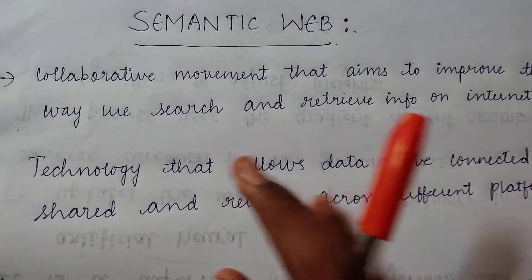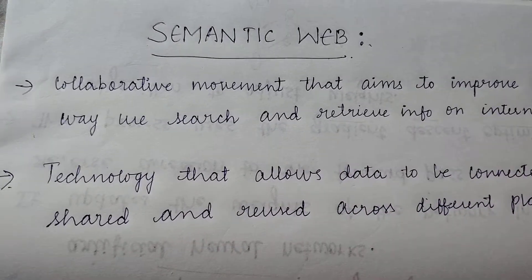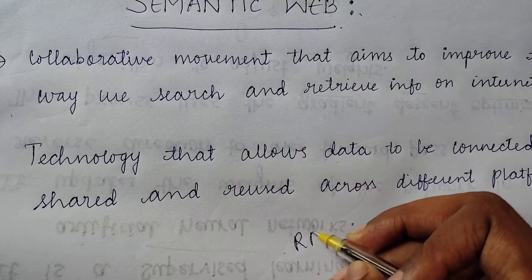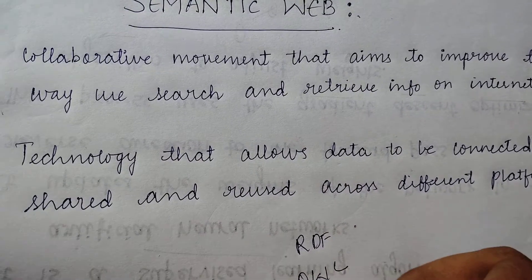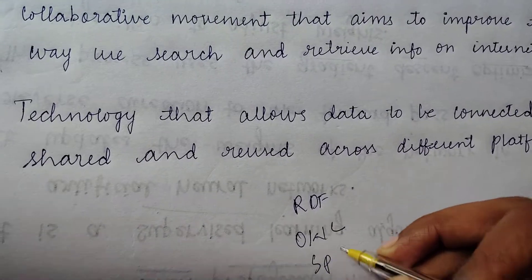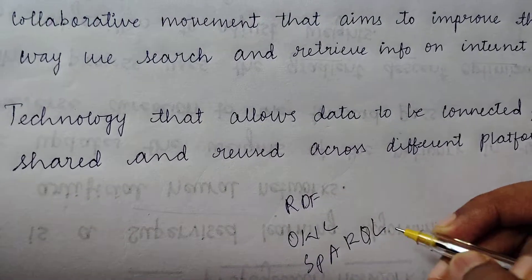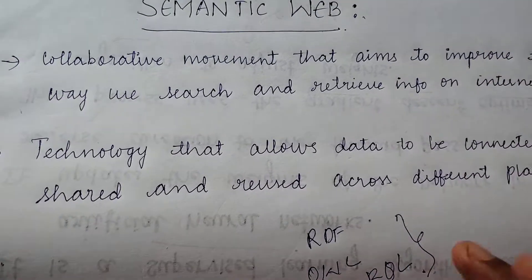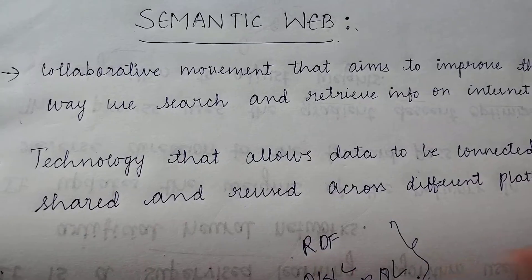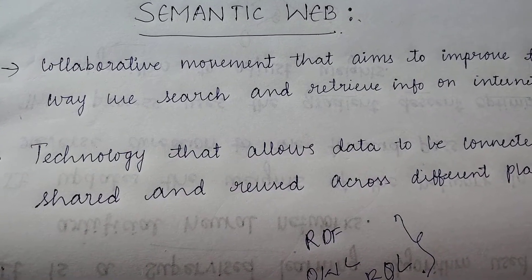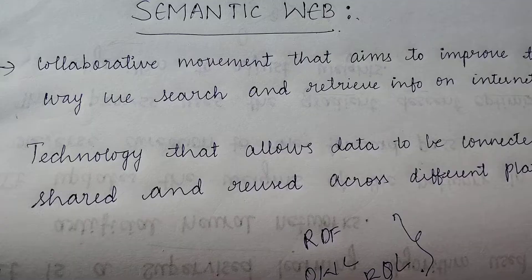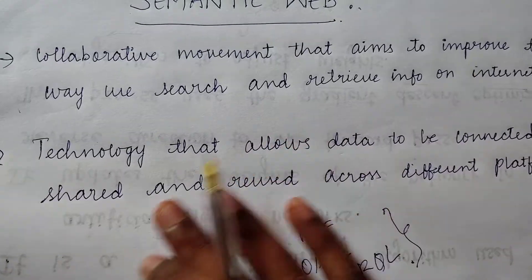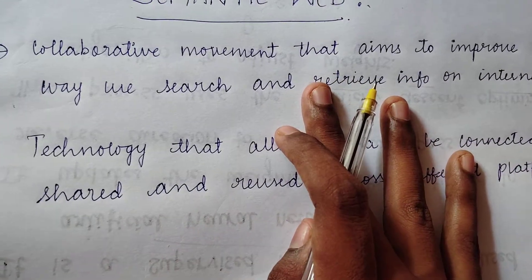This is because the semantic web is using some kind of technologies — technologies like RDF, OWL, and SPARQL. These are the three technologies semantic web is using, because of which we are able to get the exact information we are searching for. It is also used to create a web of data, which makes it easier to find out what information is being used.